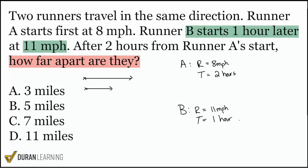That's the finer detail we have to pick up. Once we calculate the numbers correctly, we'll know we're right. For Runner A: distance equals rate times time — 8 miles per hour times 2 hours equals 16 miles. For Runner B: distance equals rate times time — 11 times 1 equals 11 miles.